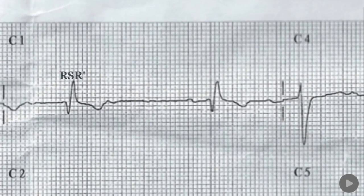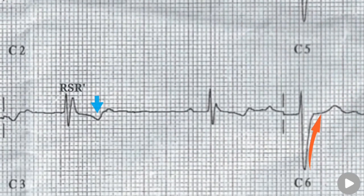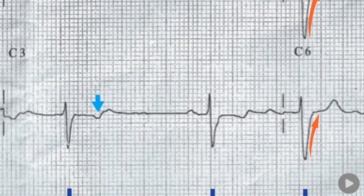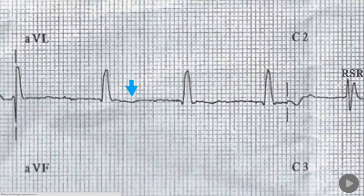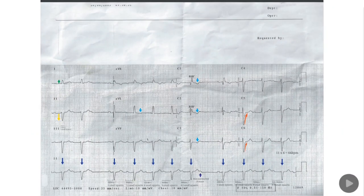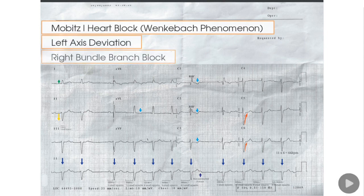This ECG is also showing T-wave inversion in V1, V2, and V3, and also in AVL. So in summary, this ECG is showing second-degree heart block, Mobitz type 1 or Wenckebach phenomenon, with left axis deviation and right bundle branch block.